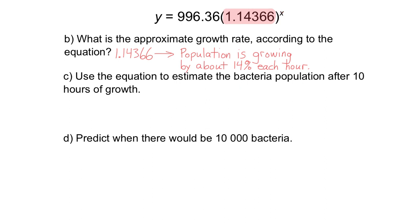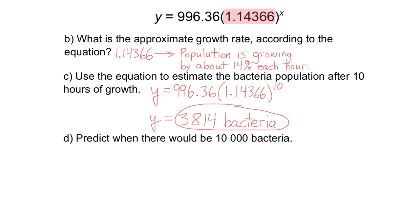In part C, use the equation to estimate the bacteria population after 10 hours of growth. 10 hours means x is 10. So I'll insert 10 where the x is and do the calculation: 996.36 multiplied by 1.14366 to the power of 10. If you do that in your calculator, you'll get approximately 3,814 bacteria as the population after 10 hours of growth. Notice I rounded my answer to a whole number, because I'm talking about population — numbers of bacteria.